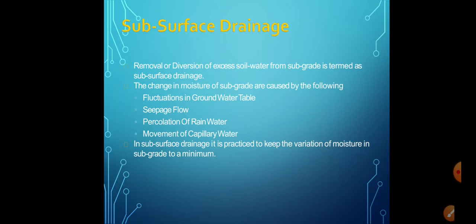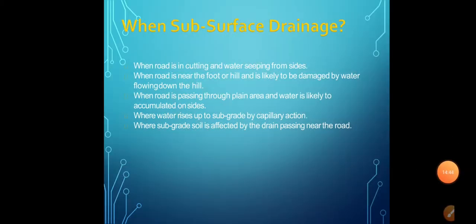Subsurface drainage is the removal or diversion of excess water from the subgrade. Changes in moisture of the subgrade are caused by: fluctuation in the groundwater table, seepage flow of water, percolation or penetration of rain water, and capillary effect. In subsurface drainage it is more practical to keep variations of moisture in the subgrade as minimum as possible.